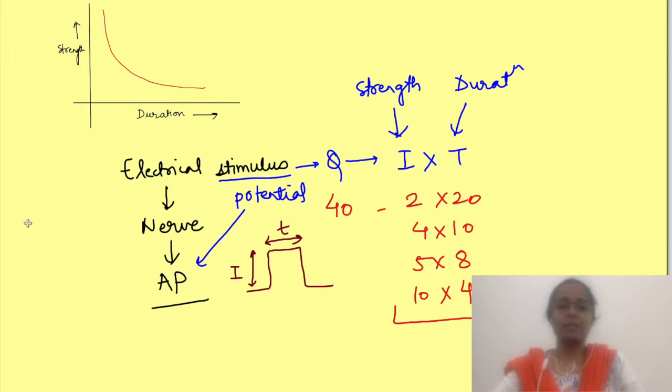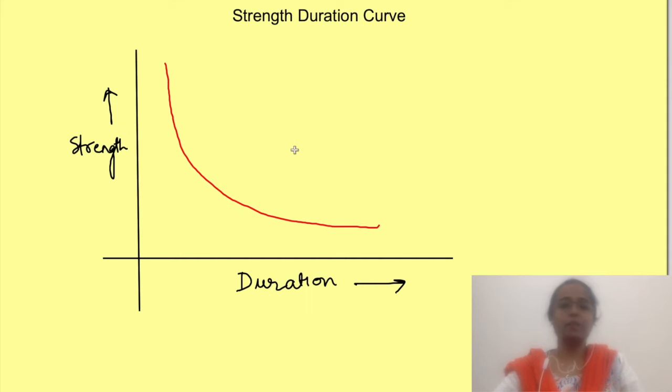So now let's see the strength duration graph of a nerve. In this graph x-axis shows the stimulus duration while y-axis shows the stimulus strength. This graph represents all the stimulus strength and stimulus duration combinations which will produce a response in nerve.